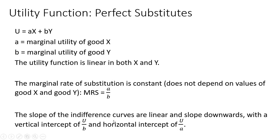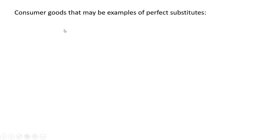The indifference curves are linear and slope downwards — they have a negative slope. The vertical intercept of an indifference curve will be utility divided by b. So if utility is 20 and b is 2, the vertical intercept will be 20 divided by 2, or 10.